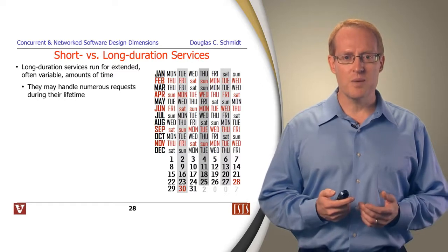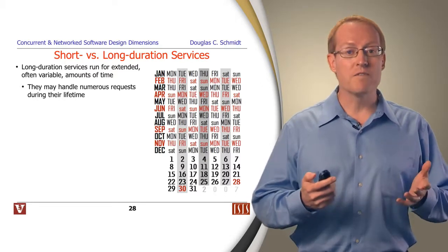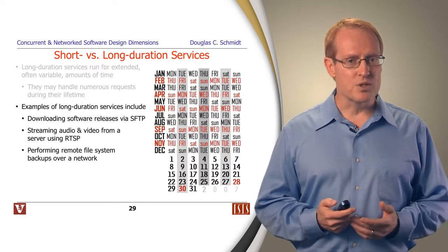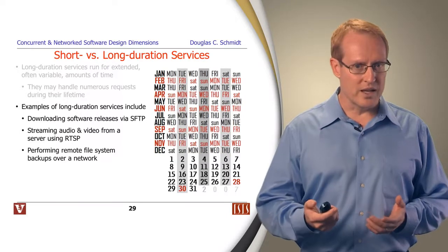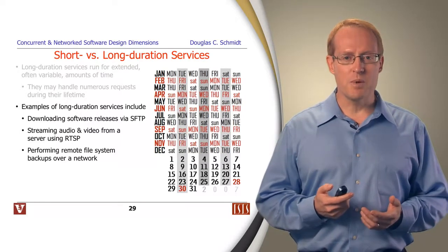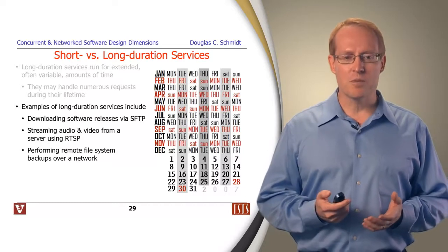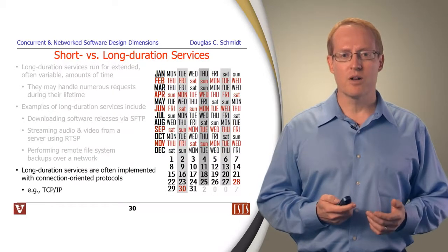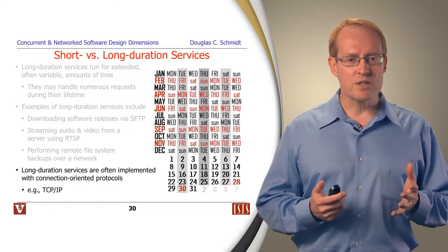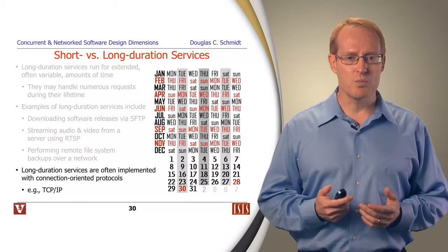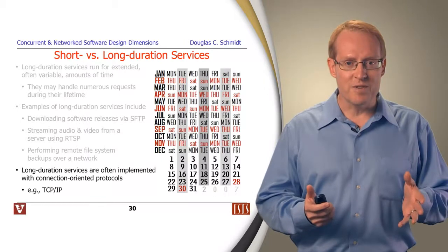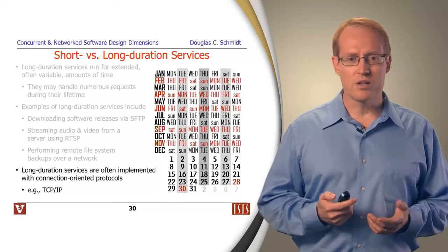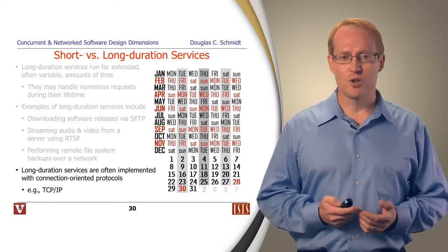Long duration services, in contrast, typically run for extended, often variable amounts of time, and can handle numerous requests during their lifetime. Examples include downloading software releases via secure FTP or HTTP, streaming audio/video using the real-time streaming protocol, and performing a remote file system backup over a network. Long duration services are often implemented using connection-oriented protocols because the connection setup time is insignificant relative to the delivery time, and reliability is often important — so TCP/IP is a common choice.